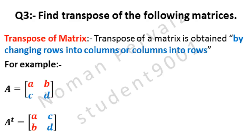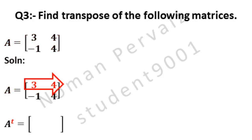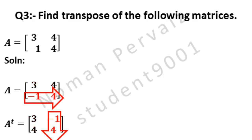Next, we will apply this property to solve the question. We have matrix A having 4 elements which are 3, 4, minus 1, and 4. A-transpose means transpose of A. The 1st row, which is 3 and 4, is converted to the 1st column. The 2nd row, which is minus 1 and 4, is converted to the 2nd column. Hence this is the transpose of matrix A.